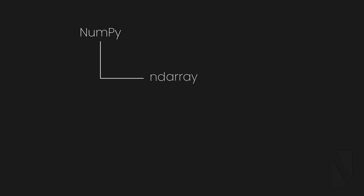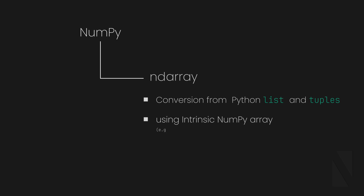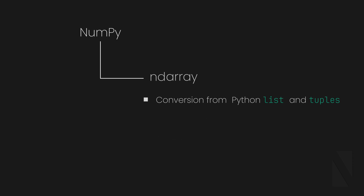There are several ways to create arrays, but some are more common — for example, conversion from Python lists and tuples, or using intrinsic NumPy array creation functions like arange, ones, and zeros. NumPy has over 40 built-in functions for creating arrays. The most basic and useful way is to create an array from a regular Python list or tuple using the array function.